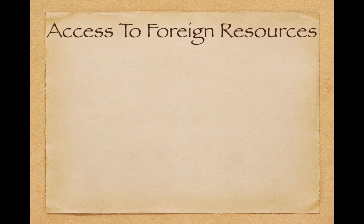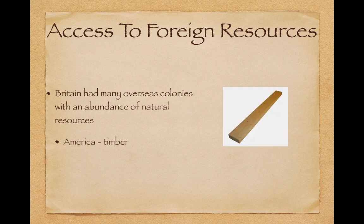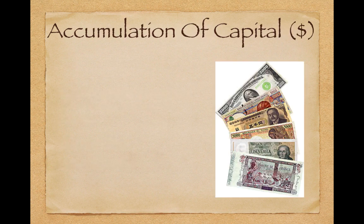Access to foreign resources was important. Britain had many overseas colonies with an abundance of natural resources. In America you have timber, which was used to build ships, and also cotton from India — that raw material that would be produced into textiles.